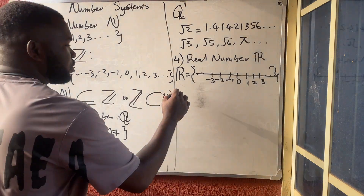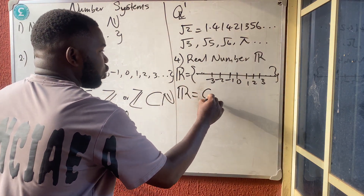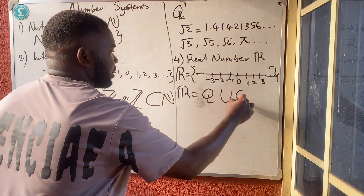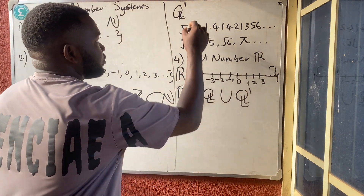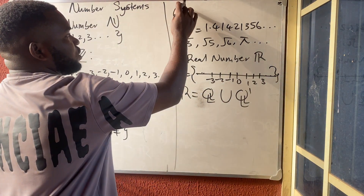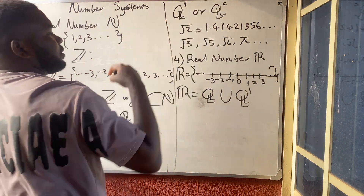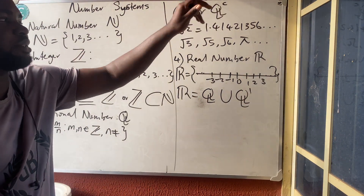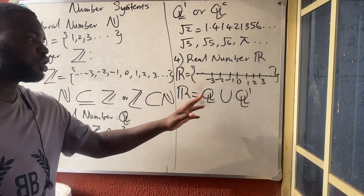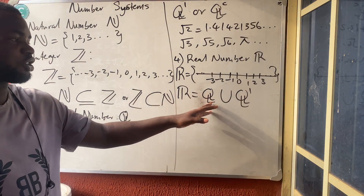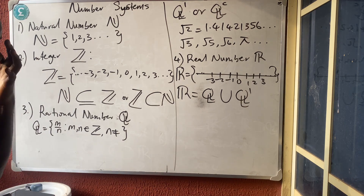Another way to define real numbers: real numbers are simply the union of rational and irrational numbers. So real numbers are just the union of the rational and the irrational numbers — please take note of that.